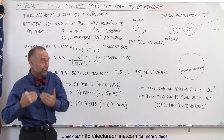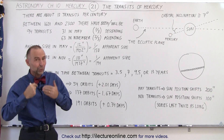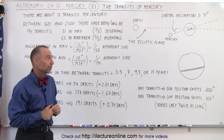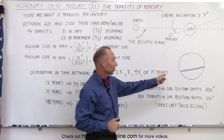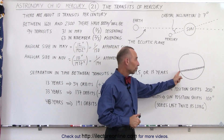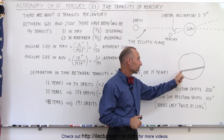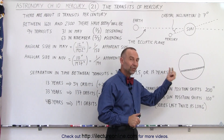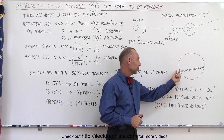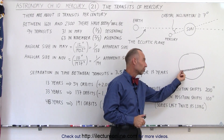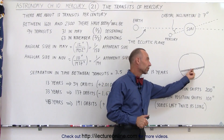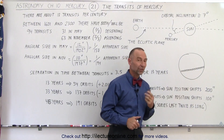Of course, you need to use special filters or you will damage your eyes. What you'll see is something like this, where slowly over time the disk — that is the planet Mercury — will slowly travel across the disk of the sun.